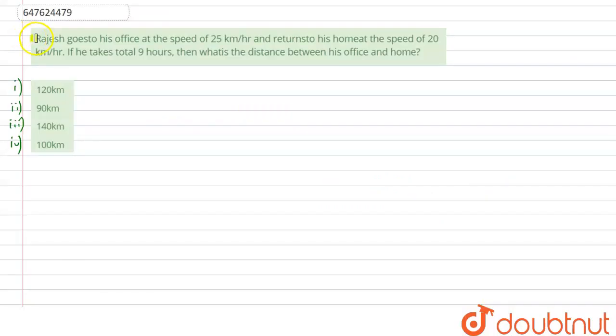Hello everyone, let's solve this question. Rajesh goes to his office at the speed of 25 km per hour and returns to his home at the speed of 20 km per hour. If he takes total 9 hours, then what is the distance between his office and home? So, let's solve it.